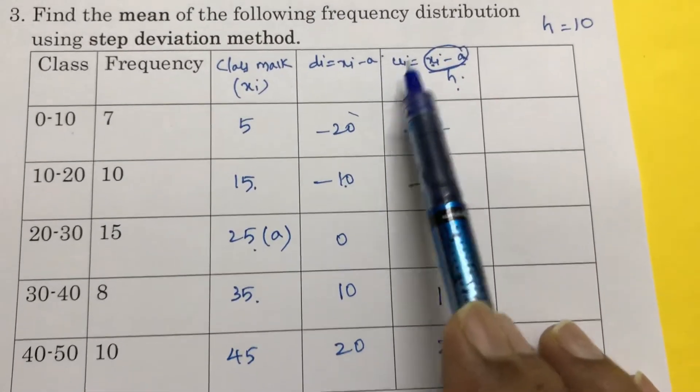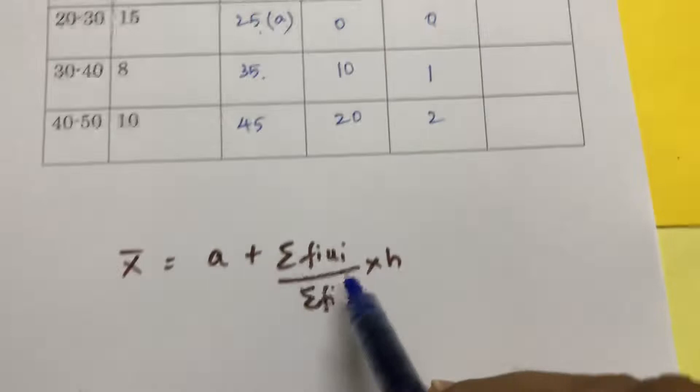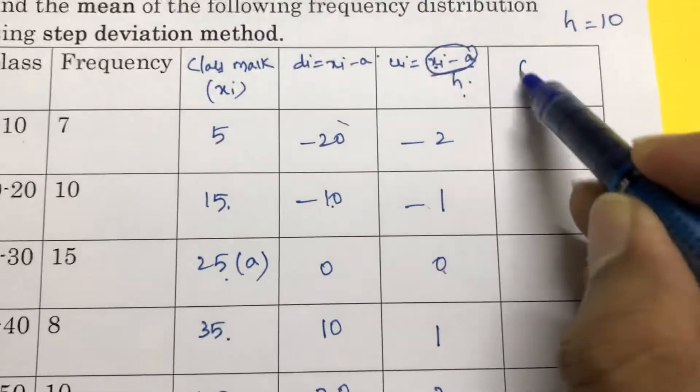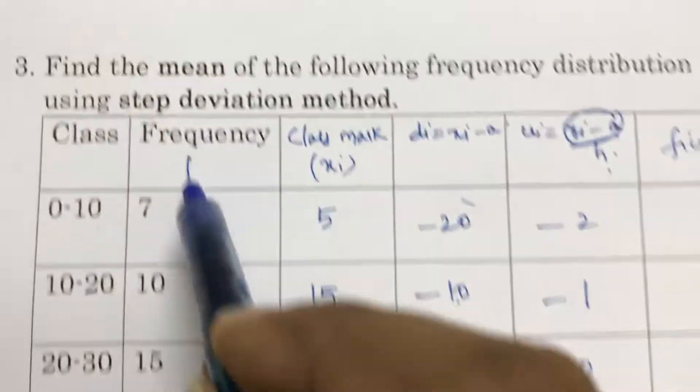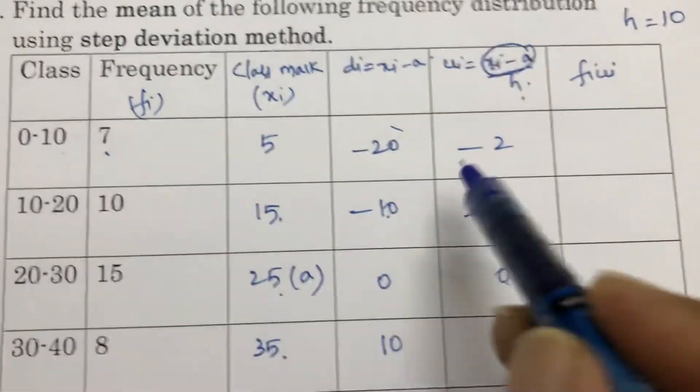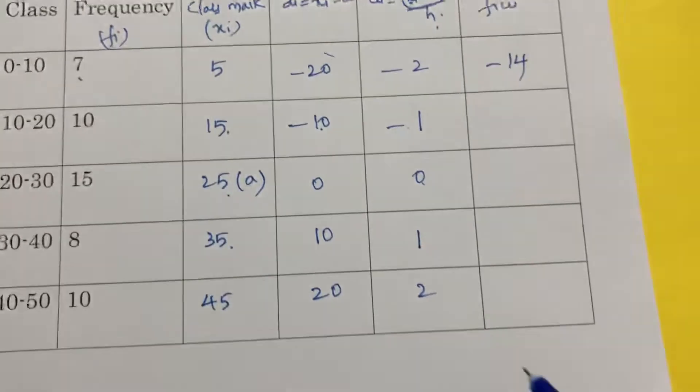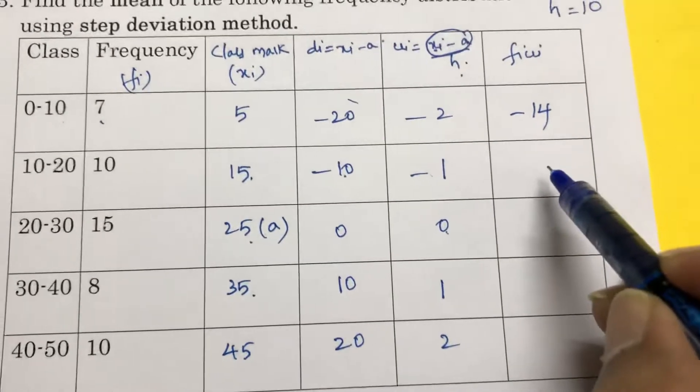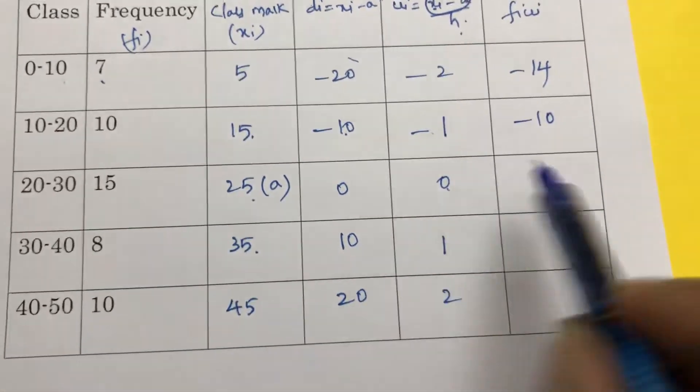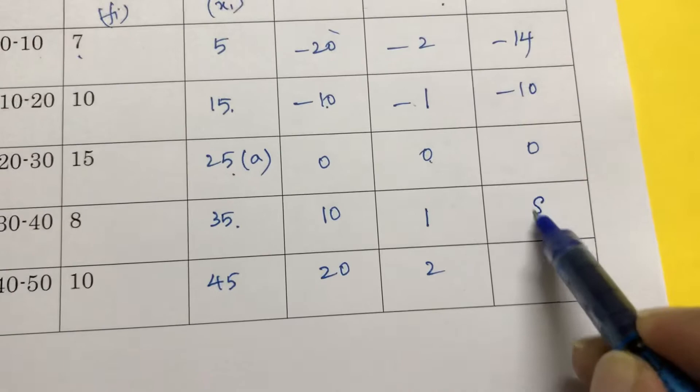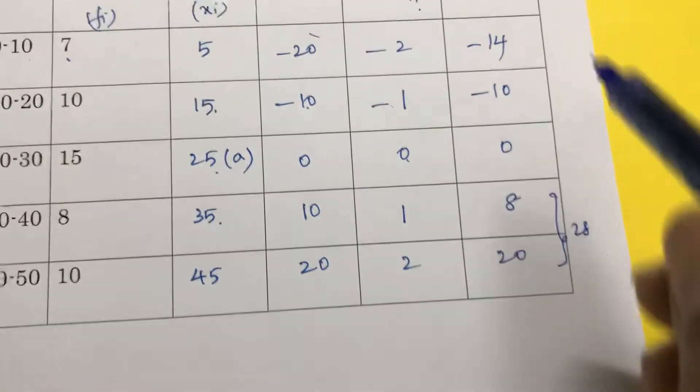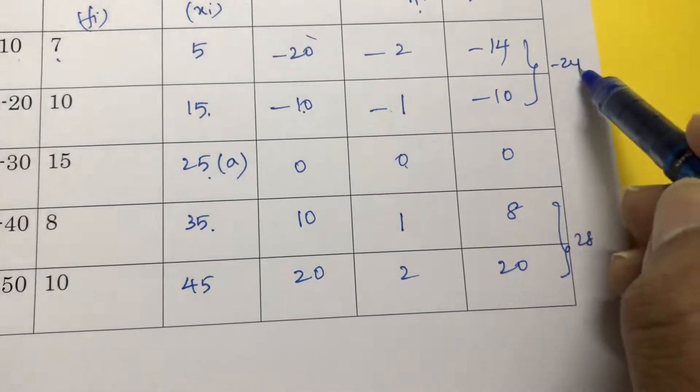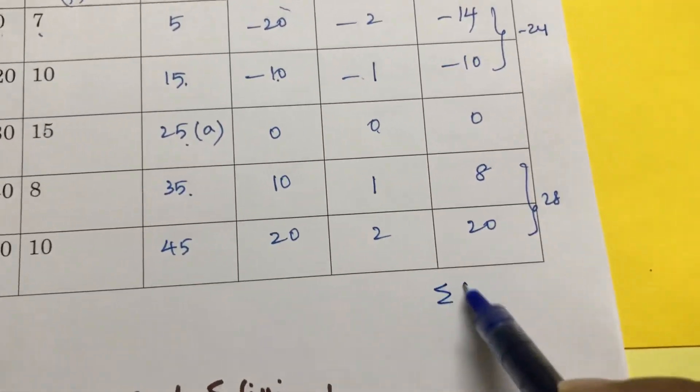Now we need fi ui. So calculate fi ui. fi is frequency: 7 into minus 2, minus 14; 10 into minus 1, minus 10; 0; 8 into 1, 8; 10 into 2, 20. So the positive values are 28 and here negative values are minus 24. So summation of fi ui is 4 and summation of total frequency is 50.